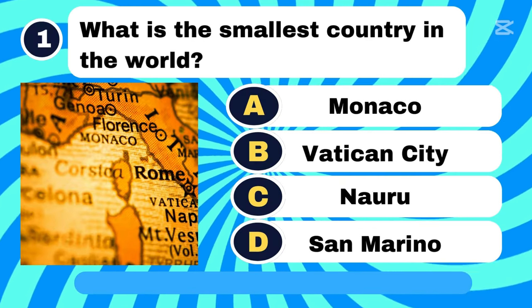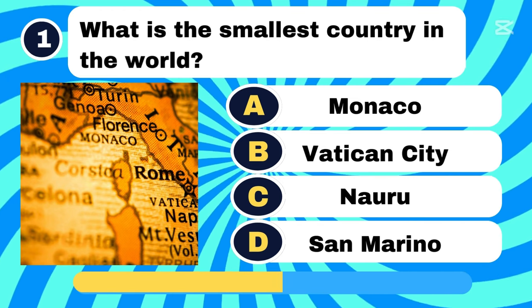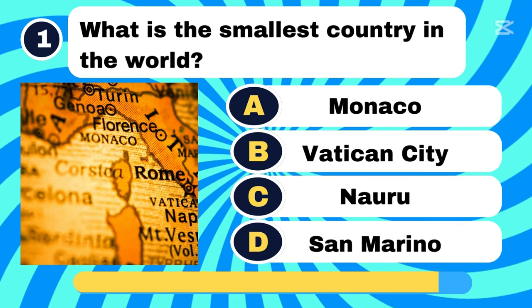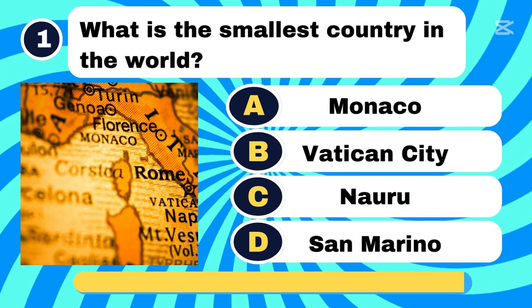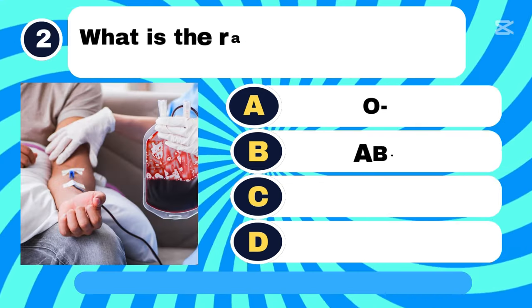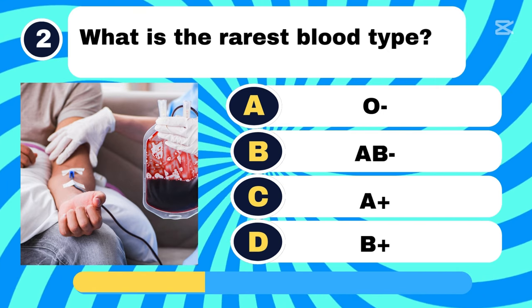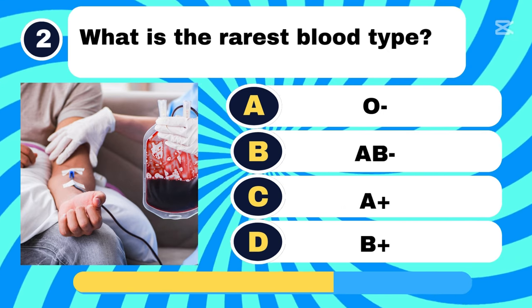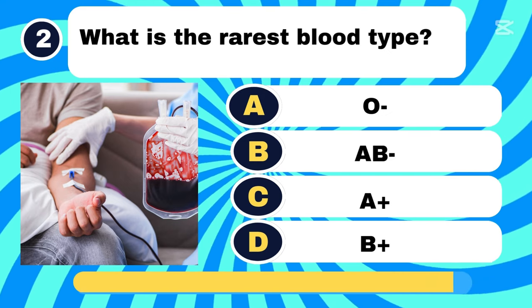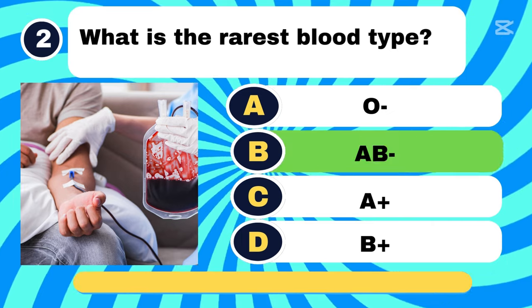What is the smallest country in the world? Letter B, Vatican City. What is the rarest blood type? Letter B, AB Negative.